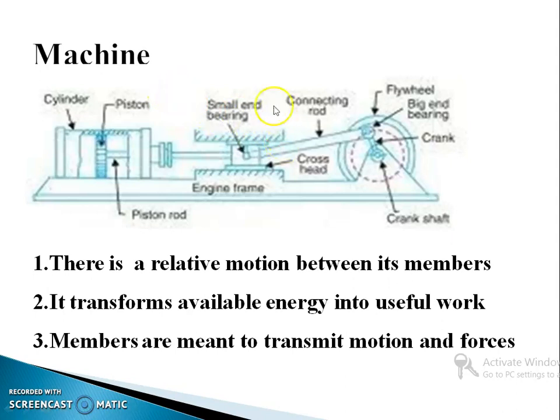Force will be acting on all these members and this force will be resisted by all these members. So, a machine is an assembly of a number of resistant bodies in which there is a relative motion between its members. It transforms available energy into useful work. Members are meant to transmit motion and forces. This is the difference between a machine and a structure.